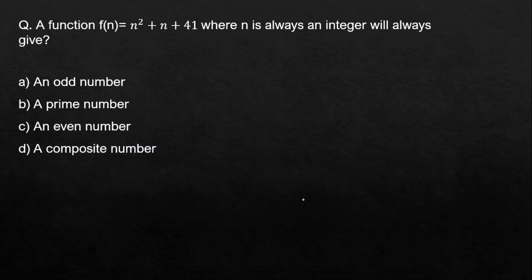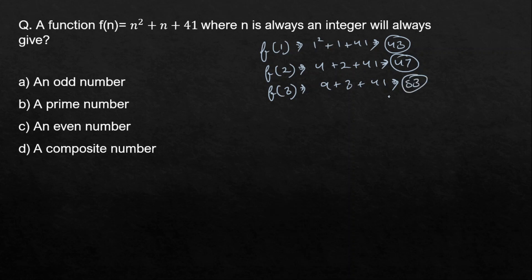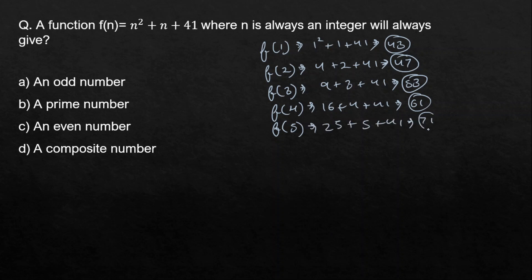Let's look at a question. A function f(n) = n² + n + 41, where n is always an integer. Will this always give a prime number? Let's check: f(1) = 1 + 1 + 41 = 43 (prime); f(2) = 4 + 2 + 41 = 47 (prime); f(3) = 9 + 3 + 41 = 53 (prime); f(4) = 16 + 4 + 41 = 61 (prime); f(5) = 25 + 5 + 41 = 71 (prime).